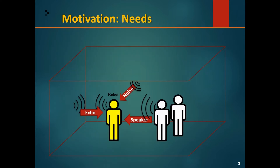First, the motivation. Why do we need any of these topics? What are echo cancellation, speaker diarization, and sound source localization for? Consider a situation where our social robot is in a room with two people. The social robot is making noise, and the two people are also speaking, sometimes in turn and sometimes together.